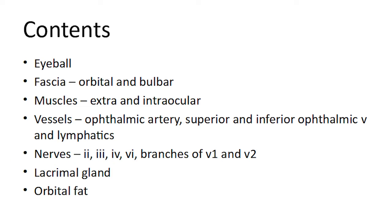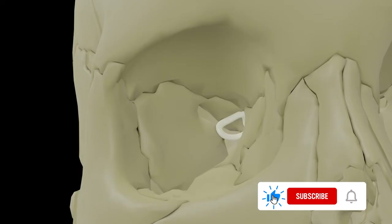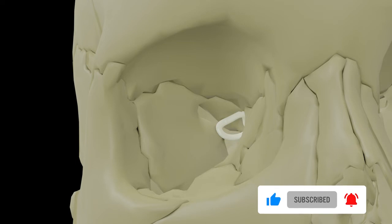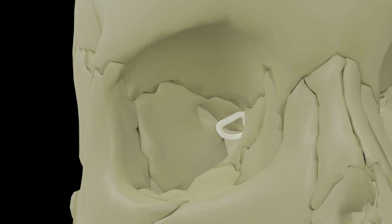Before talking more about these structures, it would be better to see what structures pass through the superior orbital fissure into the orbit and their interrelationship within the superior orbital fissure. This will put things in perspective. We touched on this point in the last video and will complete it now. This will also help in tackling questions on the superior orbital fissure, which is another important topic.